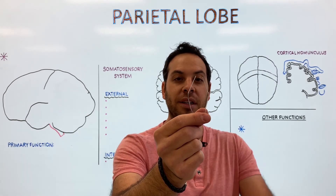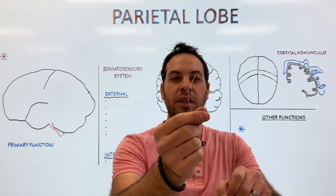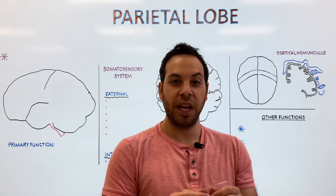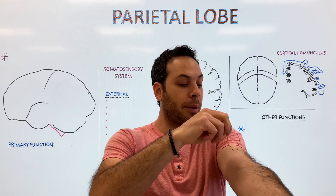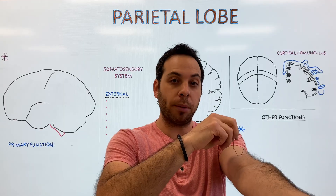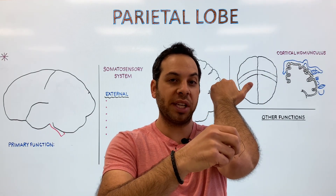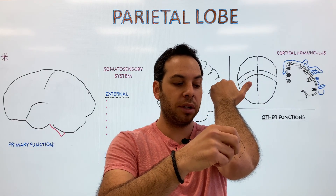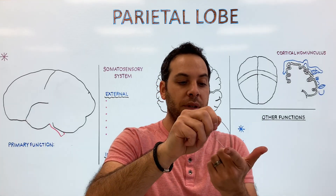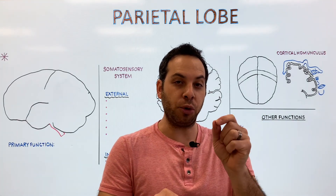Take a paper clip and bend it so you have two distinct points, and place it around different areas of your body. You'll find that on some areas, like your bicep, you can only sense one point. And on my elbow, I can also only sense one point. But on my lips and my fingertip, I can easily discriminate two points.